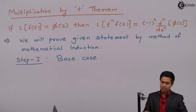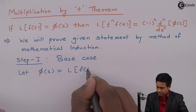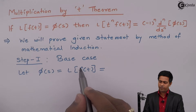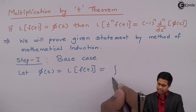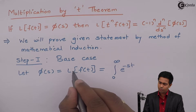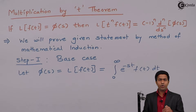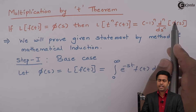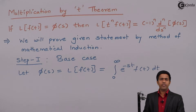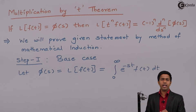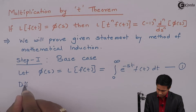Let φ(s) equal the Laplace of f(t). To prove the theorem for n equal to 1, we use the definition of Laplace transform: φ(s) equals the integral from 0 to infinity of e^(−st) · f(t) dt. We label this equation number one and differentiate both sides with respect to s, applying DUIS — differentiation under integral sign.